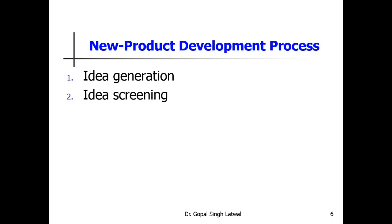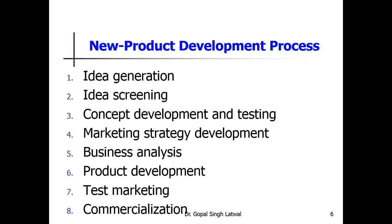The new product development process is a stage-by-stage process. The stages are: first, idea generation; second, idea screening; third, concept development and testing; fourth, market strategy development; fifth, business analysis; sixth, product development; seventh, market testing; and eighth, commercialization. Every product that a company wants to develop as a new product must pass through these eight stages.